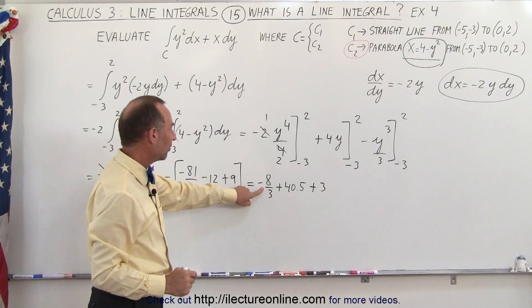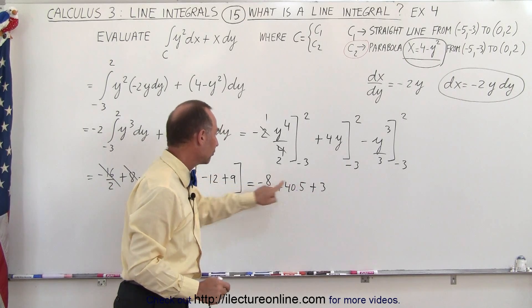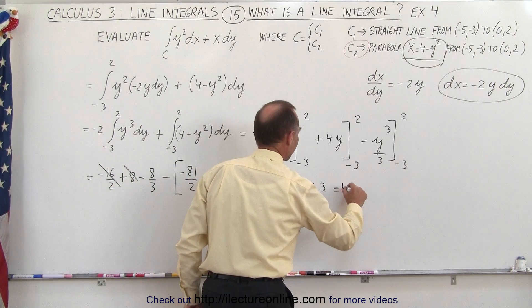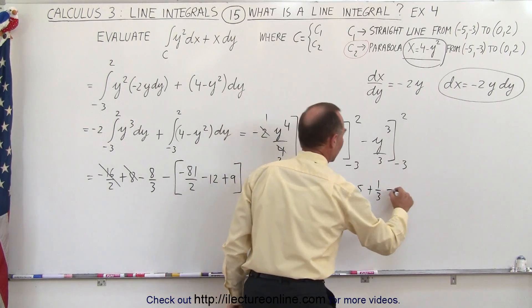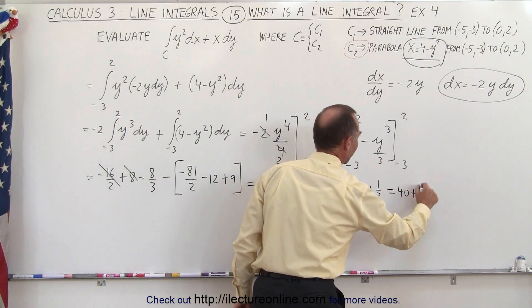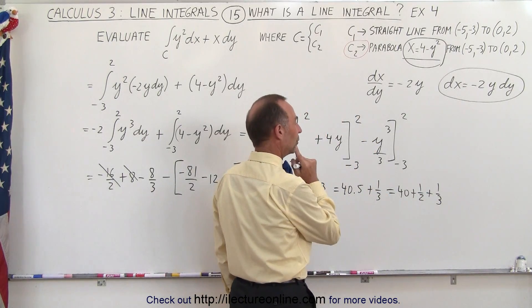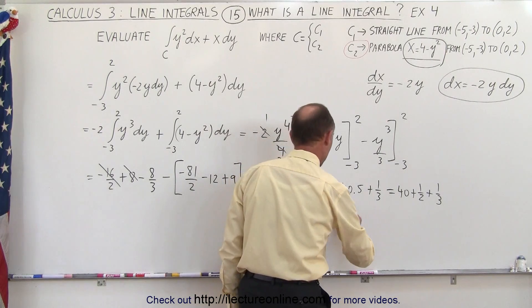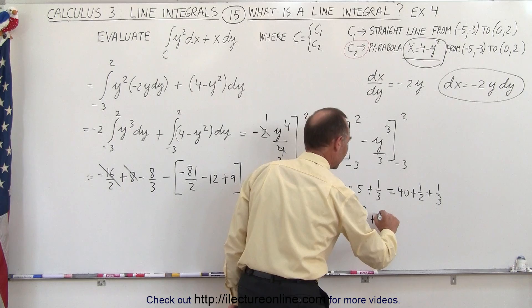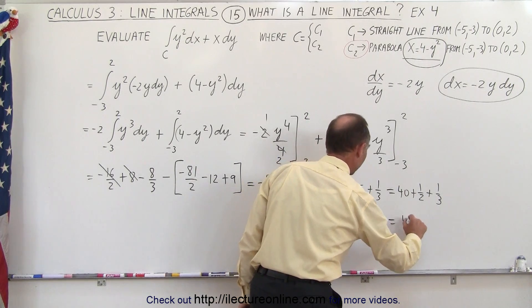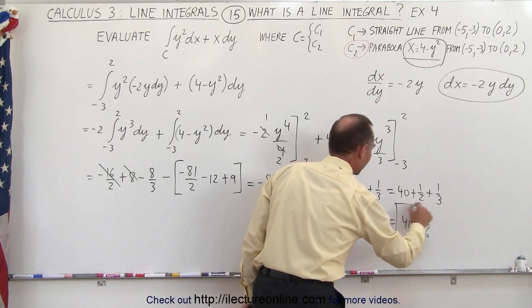So we have minus 8 thirds plus 3, which is 9 thirds. 9 thirds minus 8 thirds is plus 1 third. This equals 40.5 plus a third, which is 40 plus a half plus a third. A half plus a third is 3 over 6 plus 2 over 6, equals 40 plus 5 over 6, and this is the answer for this particular integral.